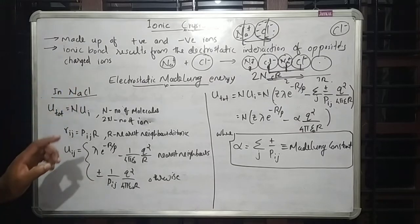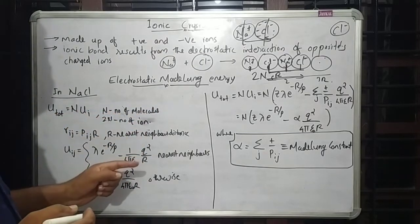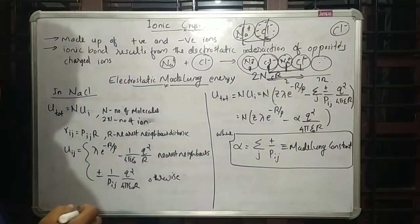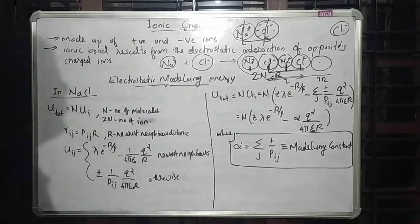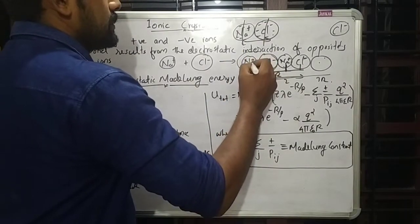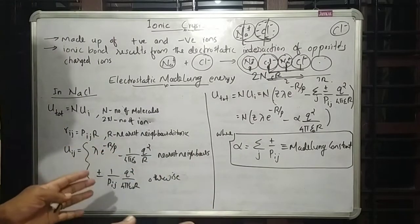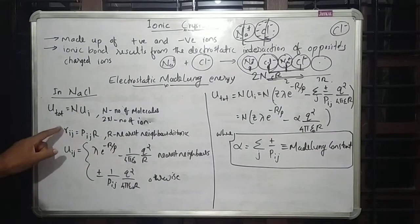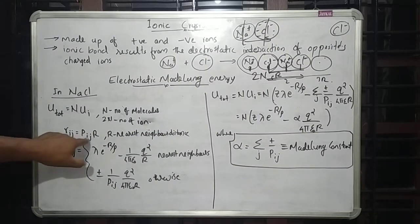For the specific case of sodium chloride crystal, U_total = N·Ui, where N is the number of molecules. If N is the number of molecules, there are 2N ions. When computing interaction energies among 2N ions, each pair must be counted once, so 2N/2 = N·Ui. The distance Rij = Pij·R, where R is the nearest-neighbor distance and Pij is an integer multiplier.